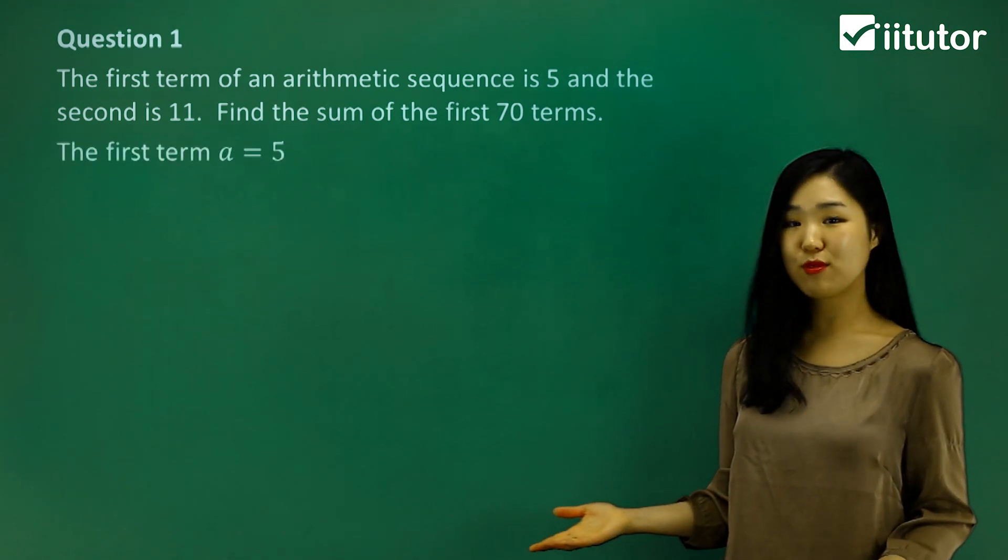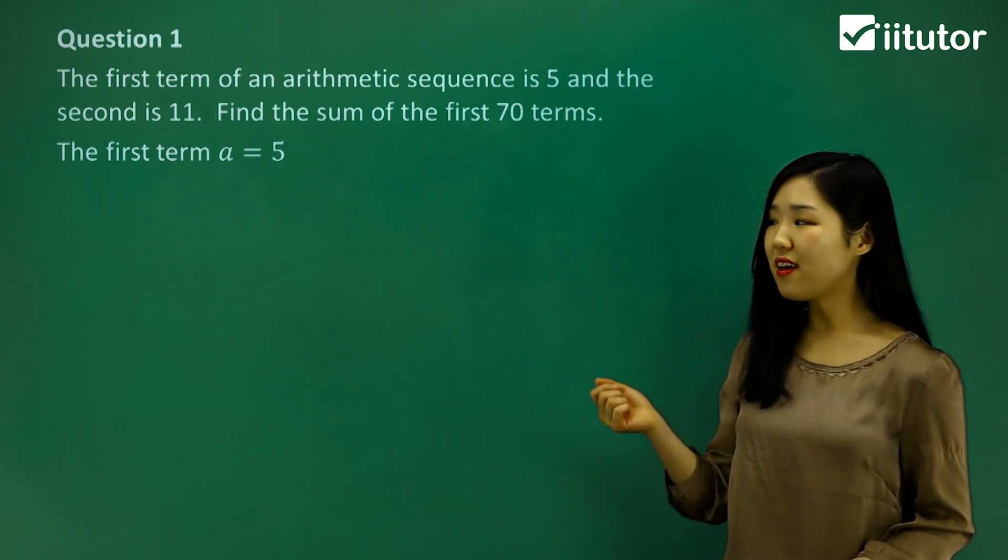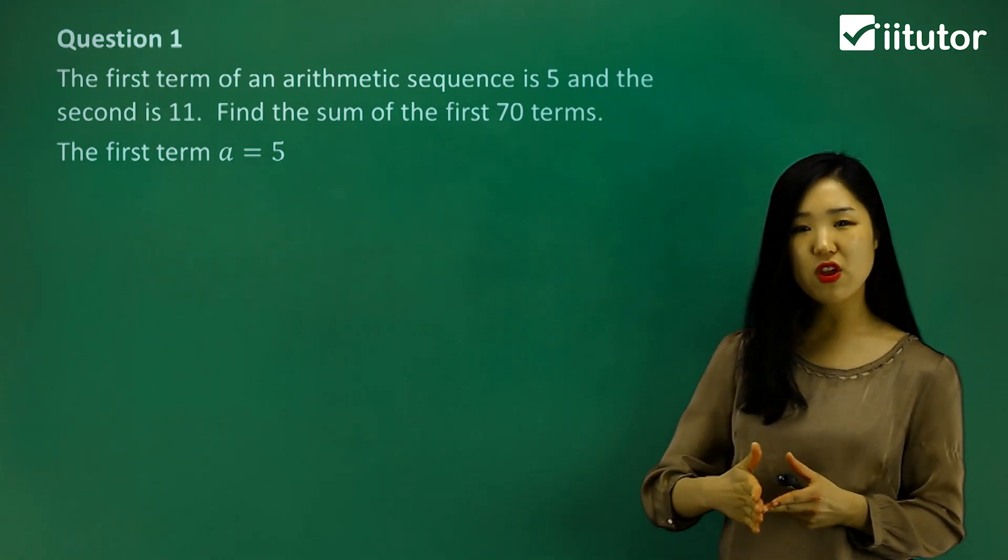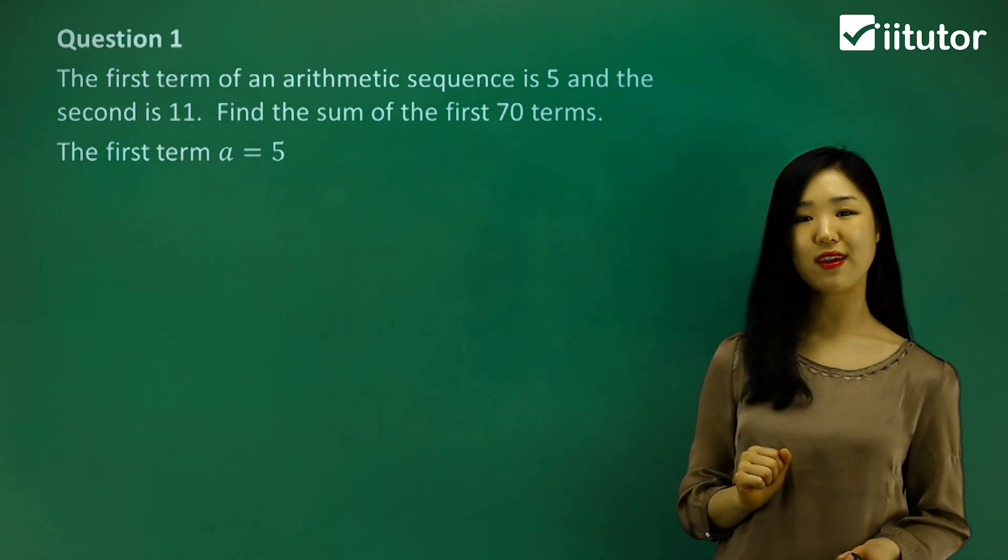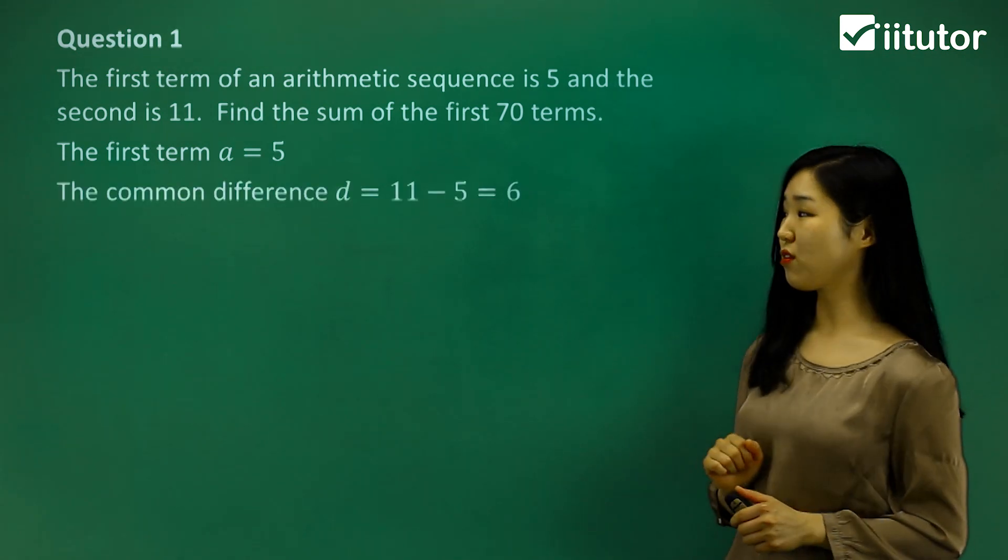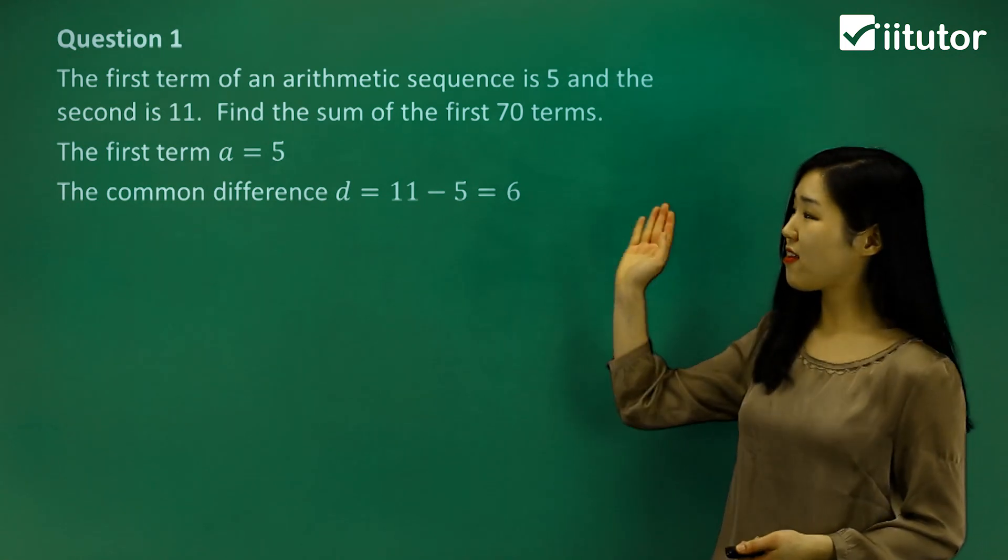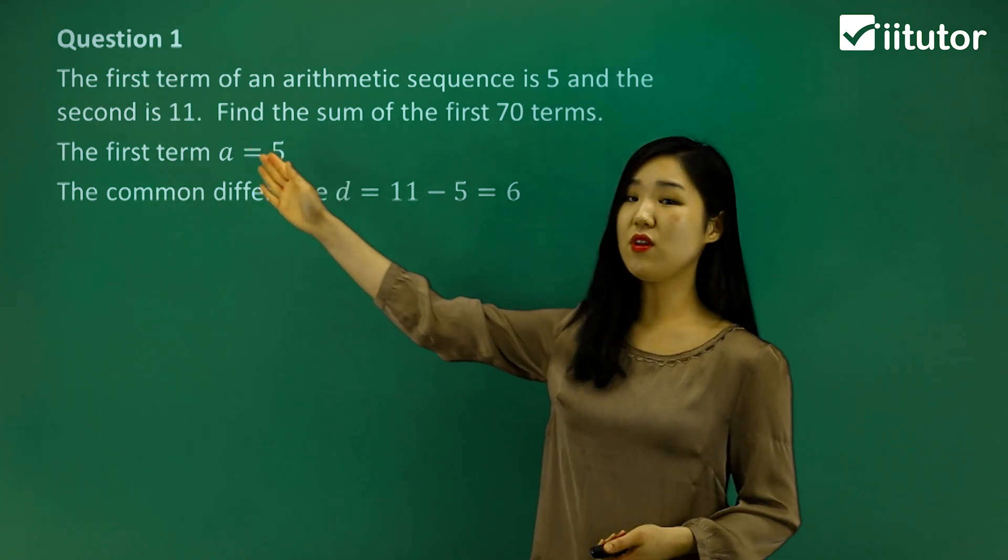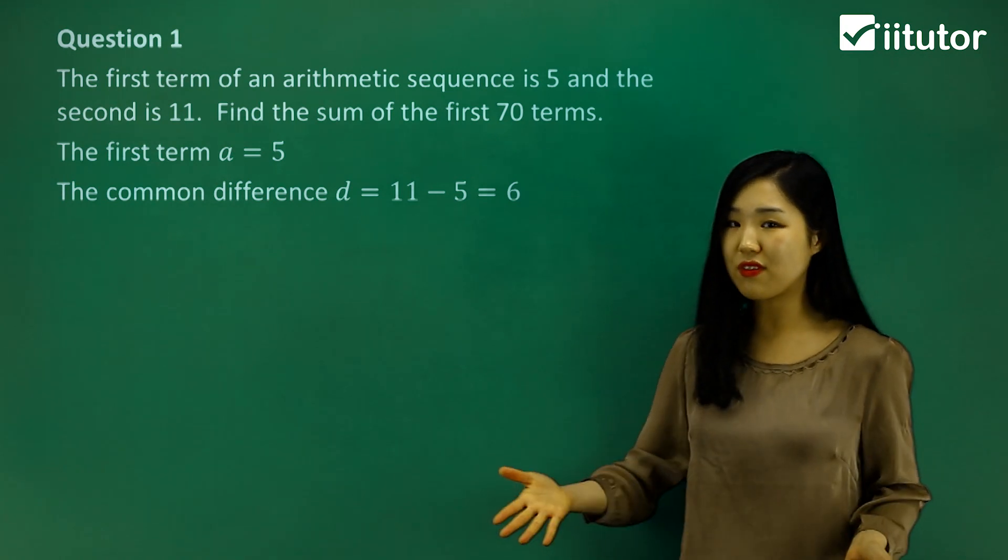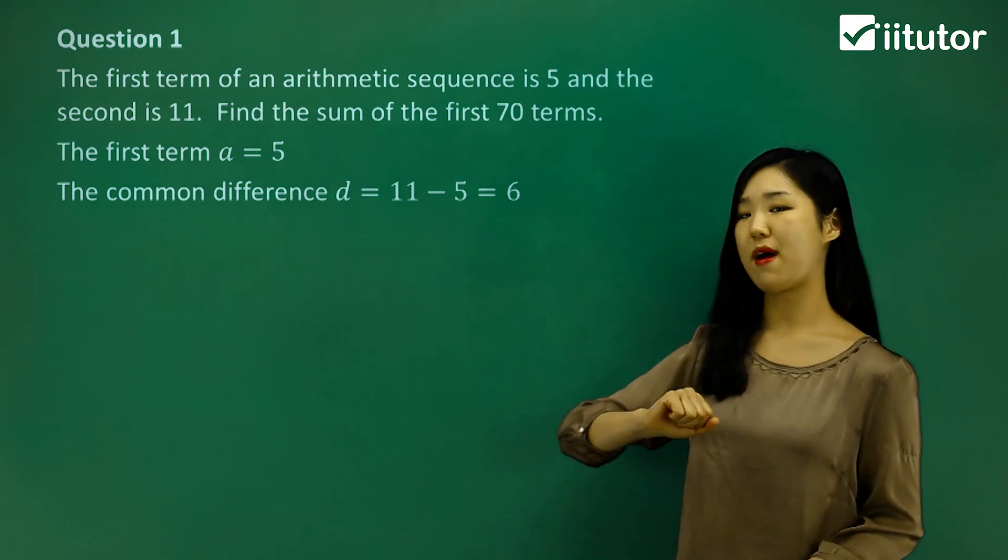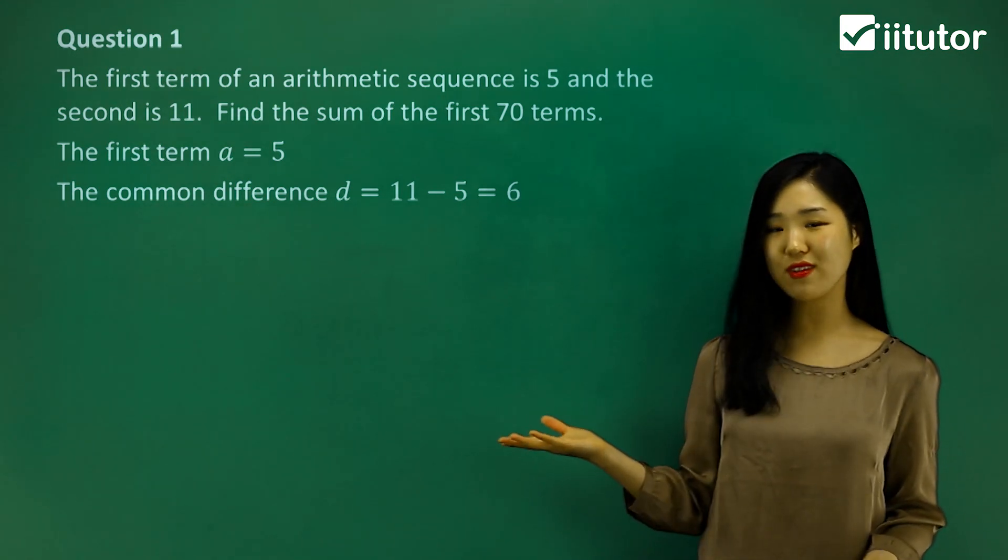We know that the first term is 5 and the second term is 11. So the first term is just 5. We can know that a is going to be 5. Now they tell us what the second term is. So if we know what the first term is and the second term of an arithmetic sequence, we can find the common difference. It's just the difference between the second term and the first term. The first term is 5, the second term is 11. We'd have to add 6 to get from 5 to 11, and you can just see that by doing 11 minus 5. That's just 6. So we know what the common difference is.